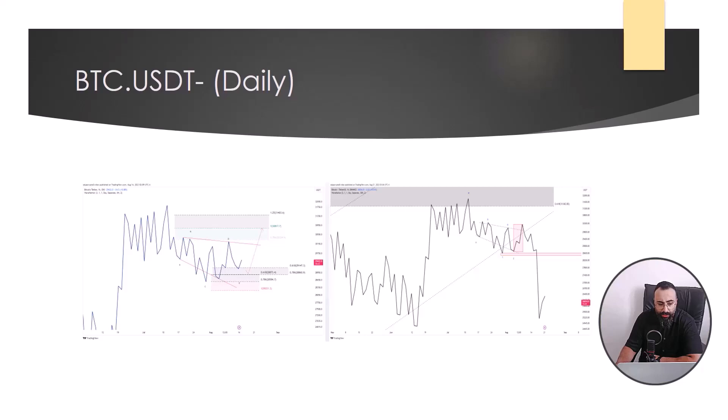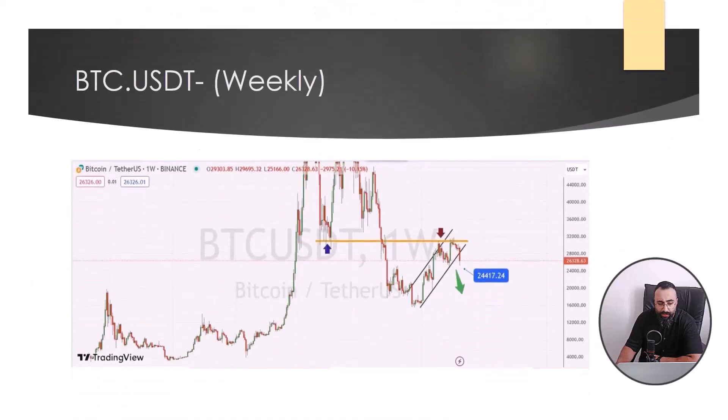In the weekly scenario, by checking, we see the price reversal with the occurrence of the support level turning into resistance. We expect that by breaching the $24,477 range, the price will fall in the long term.